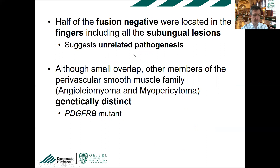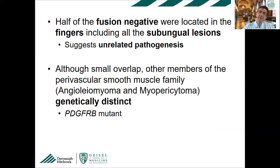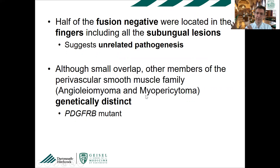Interestingly, glomus tumors we get as dermatopathologists — subungual lesions in the fingers — about half of the fusion-negative cases were located in the fingers, suggesting they may have an unrelated pathogenesis. There is some overlap: some glomus tumors may have PDGFRB mutations, overlapping with myofibromas, myopericytomas, and angioleiomyomas. But the entities of perivascular myoid tumors are for the most part genetically distinct: NOTCH-rearranged glomus tumors versus PDGFRB-mutant angioleiomyomas and myopericytomas.